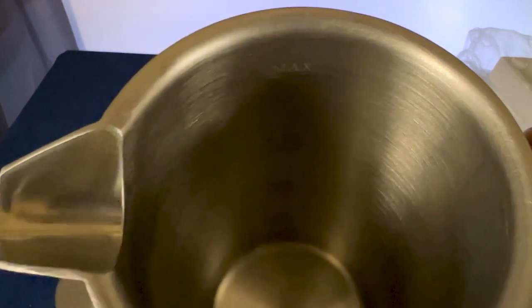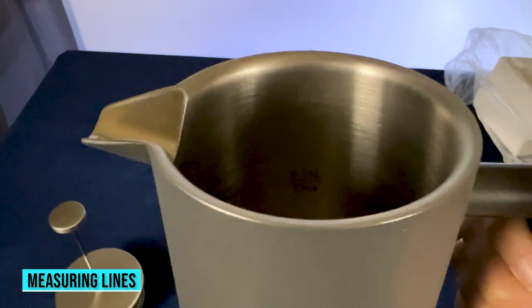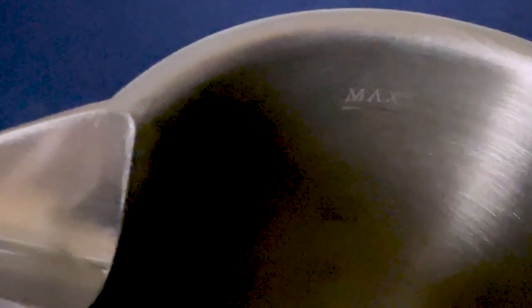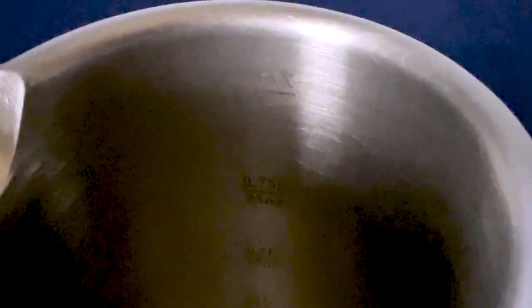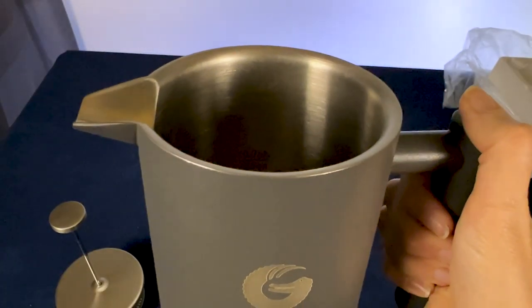Inside, there's also little measuring lines so you can tell how much liquid you're pouring in there in both imperial and metric. So it starts at 8.5 ounces on the lowest line, then it goes to 17 ounces, then to 25 ounces, then to the maximum, 34 fluid ounces.